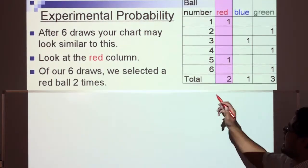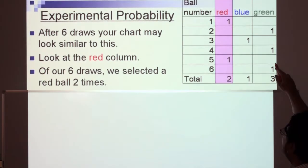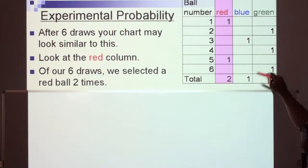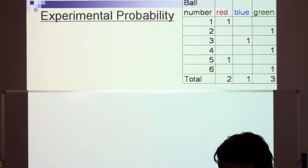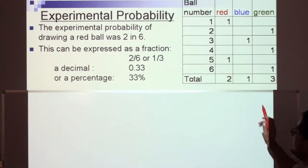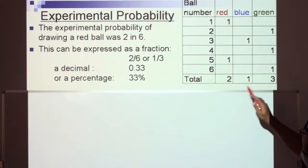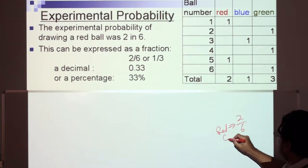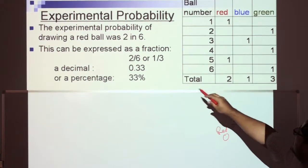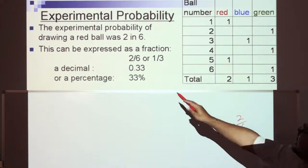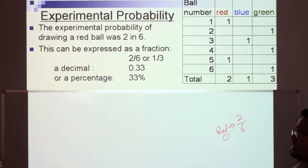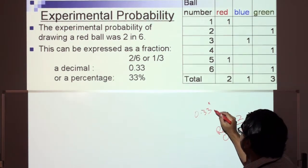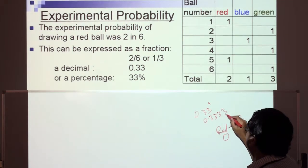After six draws, your chart may look similar to this. Of our six draws, we selected a red ball two times. The experimental probability of drawing a red ball was two in six. This can be expressed as a fraction — two over six, or one third; as a decimal — 0.33; or as a percentage — 33%. Don't forget that decimal 0.33 with the repeating bar means 0.3333 on and on.